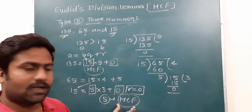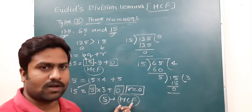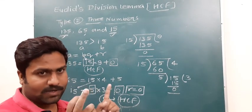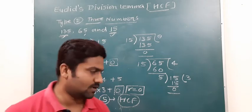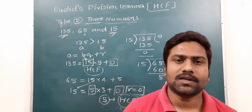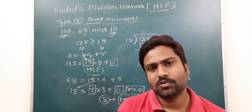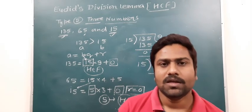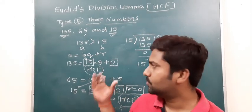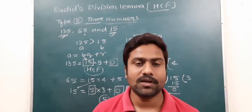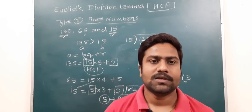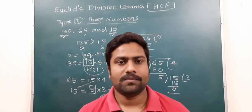That is all about finding the HCF using Euclid's Division Algorithm. I have covered the meaning of lemma, the meaning of algorithm, and the procedure with examples for two and three numbers. If you have any doubts, pick questions from the NCERT book, and if you still have problems, leave them in the comment box. Subscribe and like for more videos — thank you.